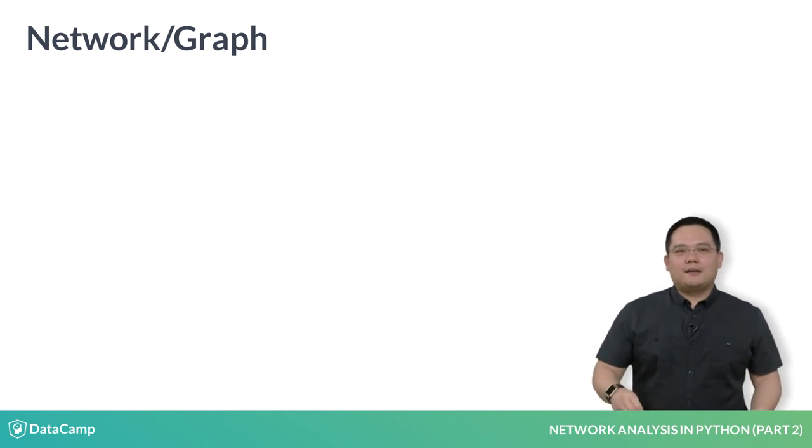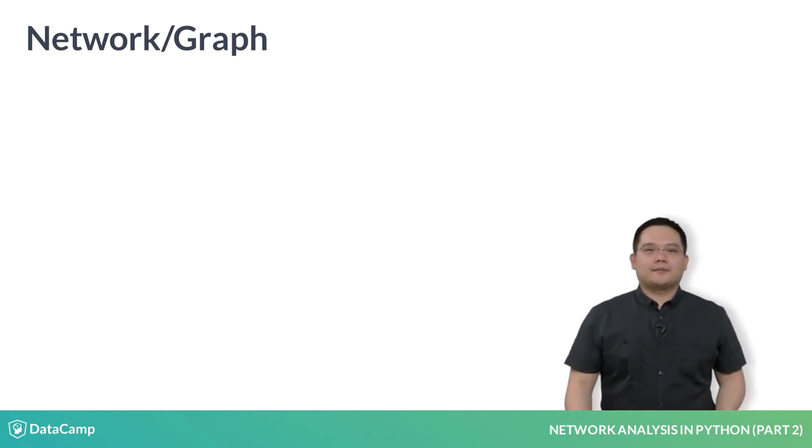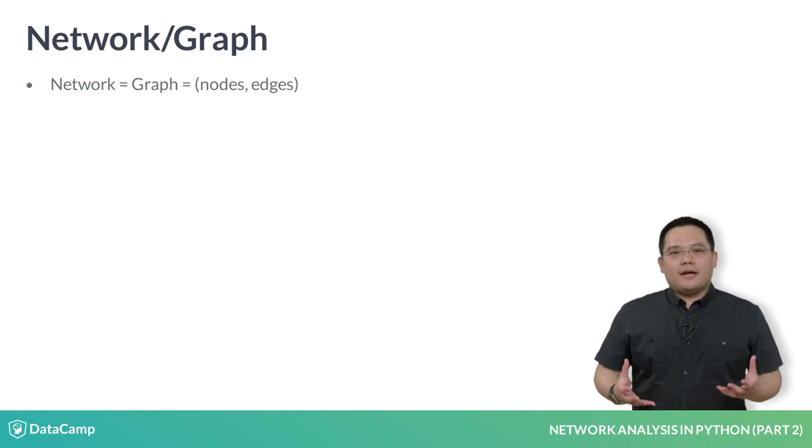To get started, let's recap some definitions. Recall that a network, which is also known as a graph, is comprised of two sets: a set of nodes and a set of edges.